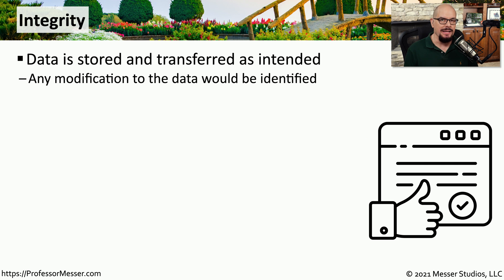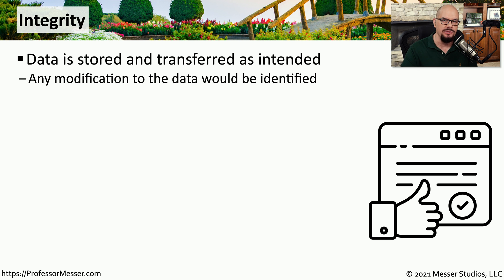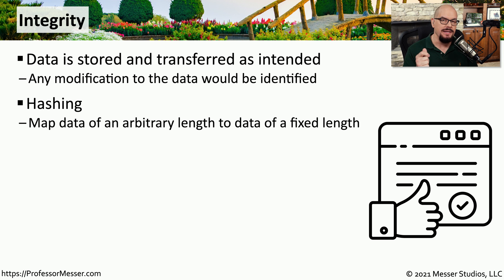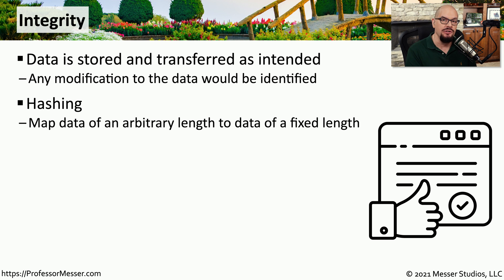The concept of integrity allows us to identify when data may have been changed. This is especially important if you're sending data to a third party, because you want to be sure that they're receiving exactly the information that you're sending and that no one in between is changing any of those details. One way to provide integrity is through the use of hashing. We can create a hash based on data that effectively is a fingerprint of all of that information. If someone changes this data in transit, then the hash we create at the end of the conversation will be different than the hash created at the beginning.